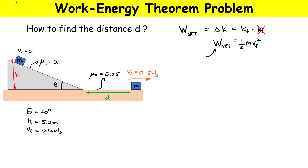We have to consider the work done over the entire trajectory — not only the ramp but also the flat section. We can break it down by looking at the ramp separately and then the flat section. So for the ramp part we write work terms over here, and for the flat section over here, and all of this must equal one-half mv_final squared.